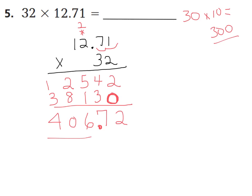This answer is reasonable because if we estimate, we have 30 times about 10, and 30 times 10 is 300. So our whole number should go to the hundreds place, which it did. You might wonder how it can be 406 — remember you're estimating, and this is actually 32 times 12, which are bigger numbers than your estimate, so your product is bigger. Therefore, we did have a correct product here. Now let's move on to our word problems at the bottom of the page.